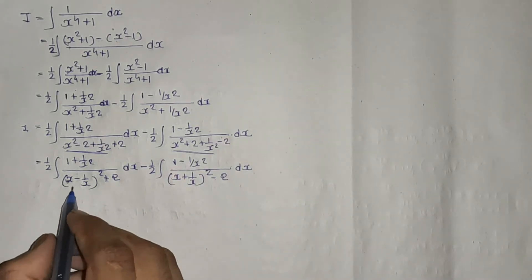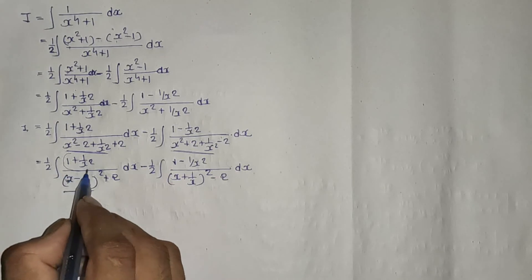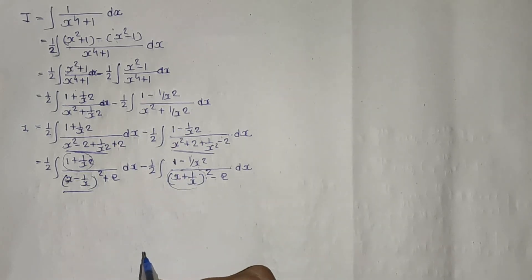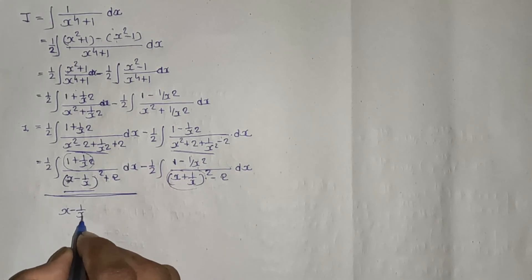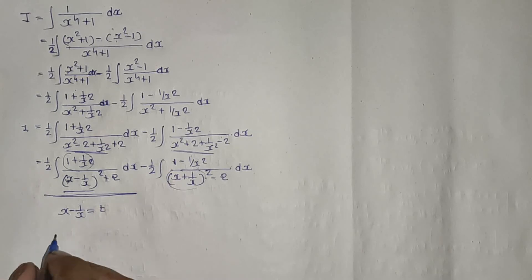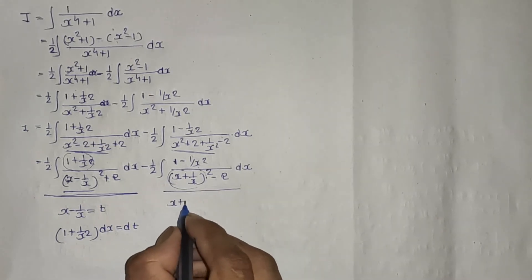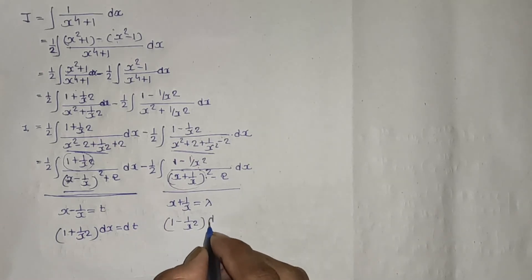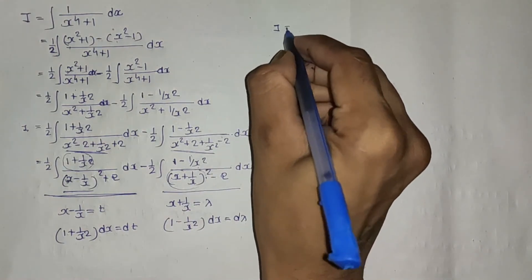The derivative of (x - 1/x) = (1 + 1/x²), and the derivative of (x + 1/x) = (1 - 1/x²). For the first integral, take x - 1/x = t, giving (1 + 1/x²)dx = dt. For the second integral, take x + 1/x = λ, giving (1 - 1/x²)dx = dλ.